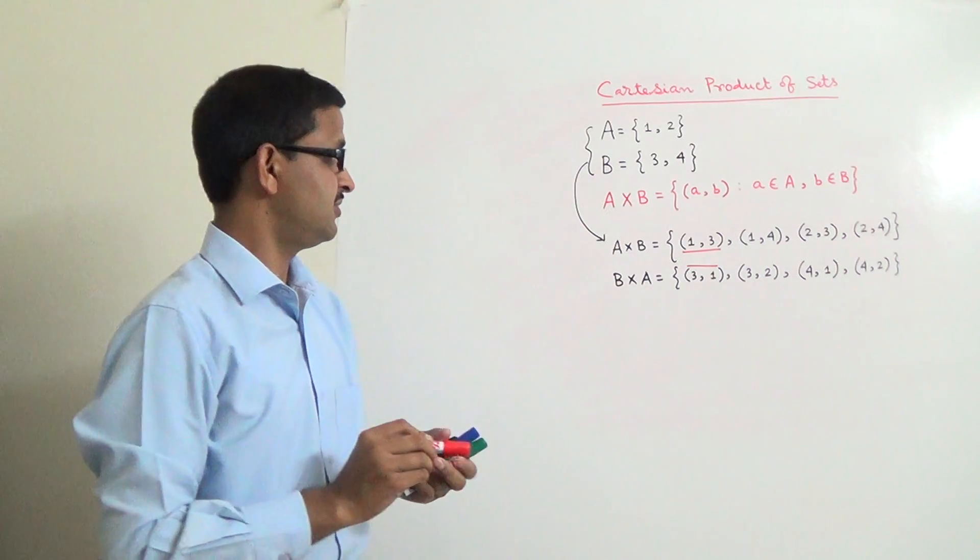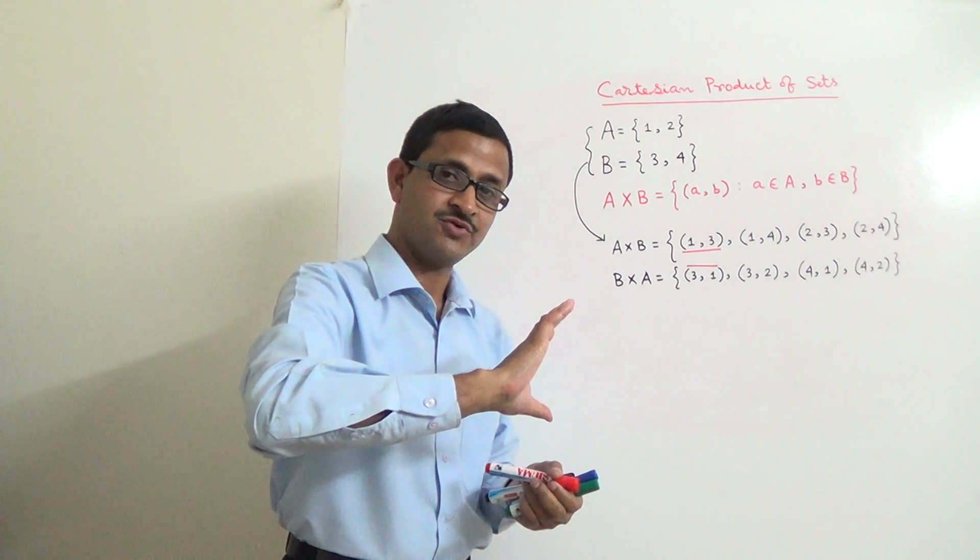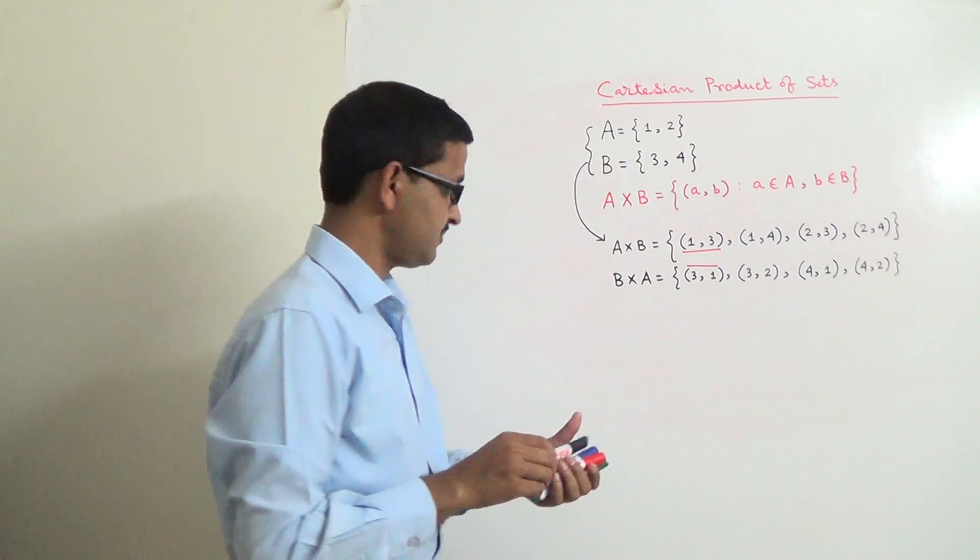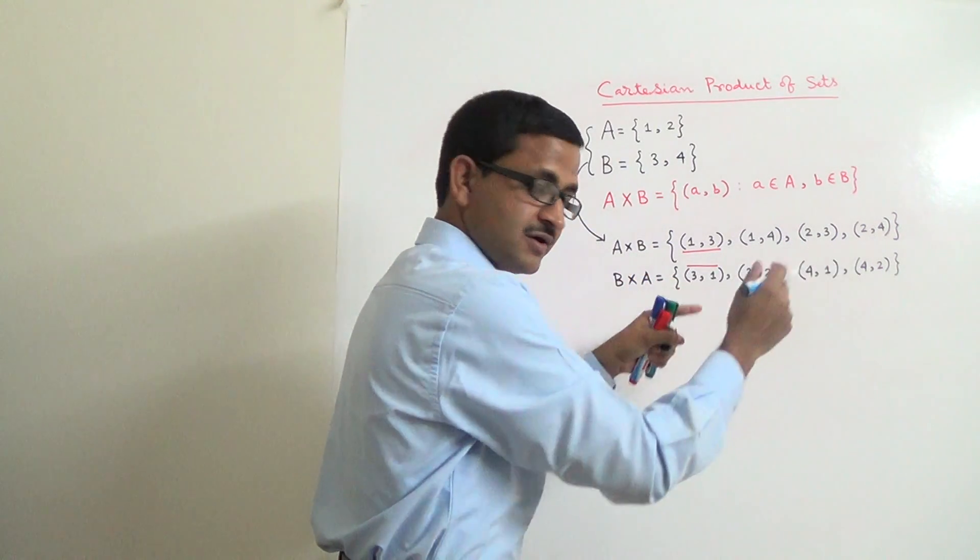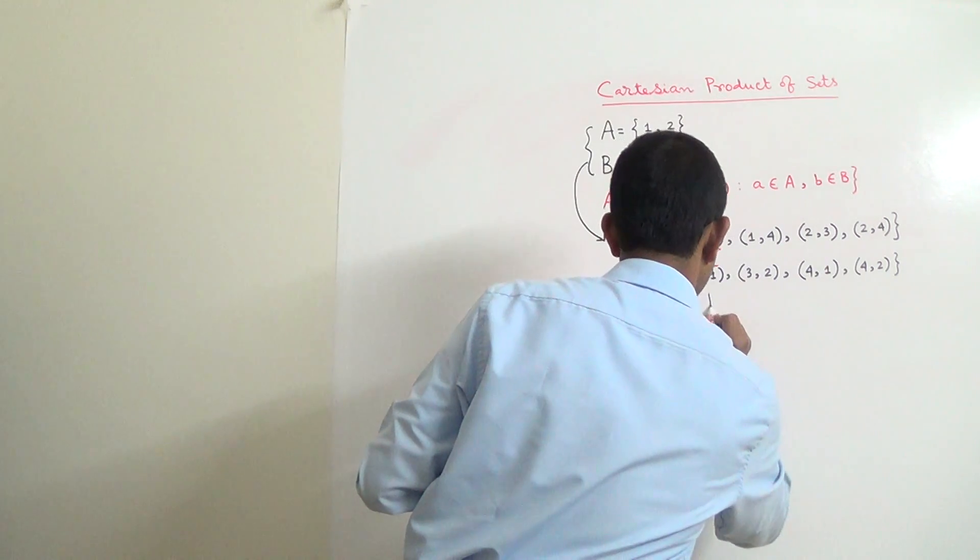Now, you want to know why they are different? Think about our Cartesian coordinate. If we draw all these elements, that ordered pair in Cartesian coordinate, how it looks like?